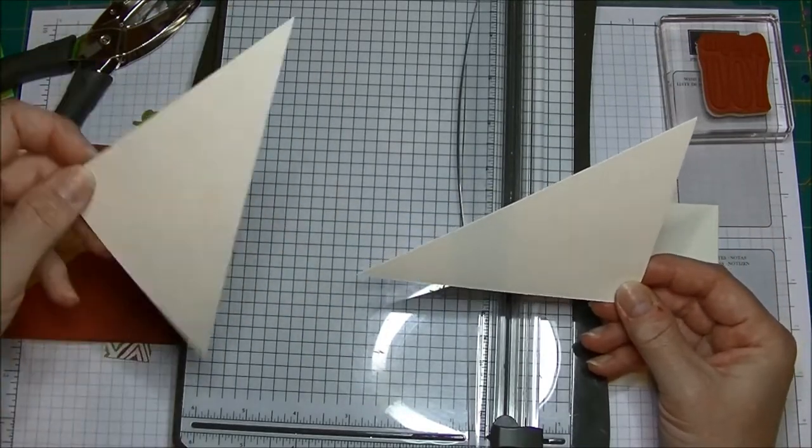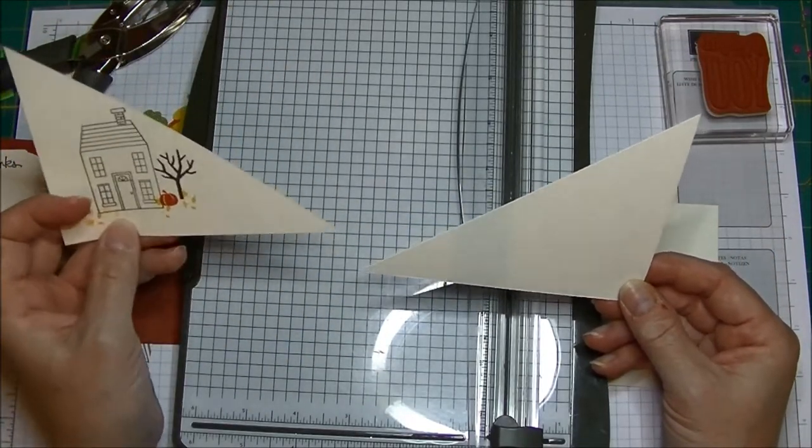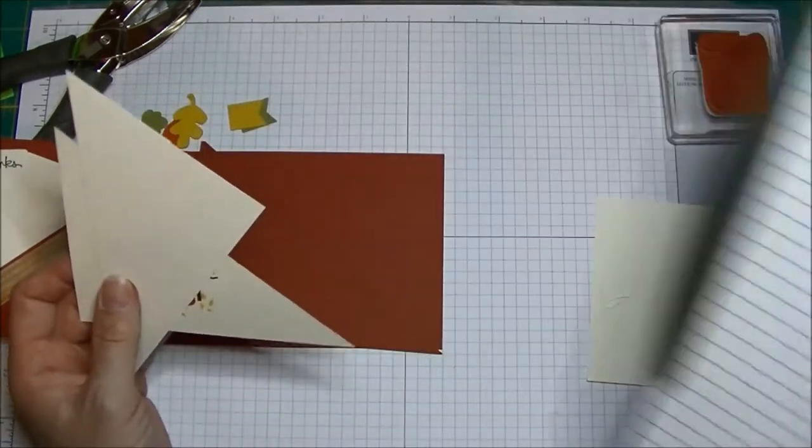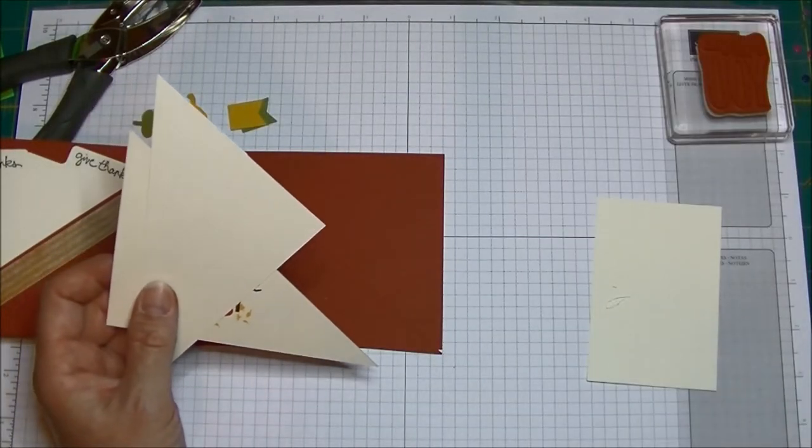Then I close this up and I just cut straight down like this, so I have two pieces like this. Sorry, this is scrap paper. I have two pieces like this to create my pockets with, so that's how I actually created my pockets.